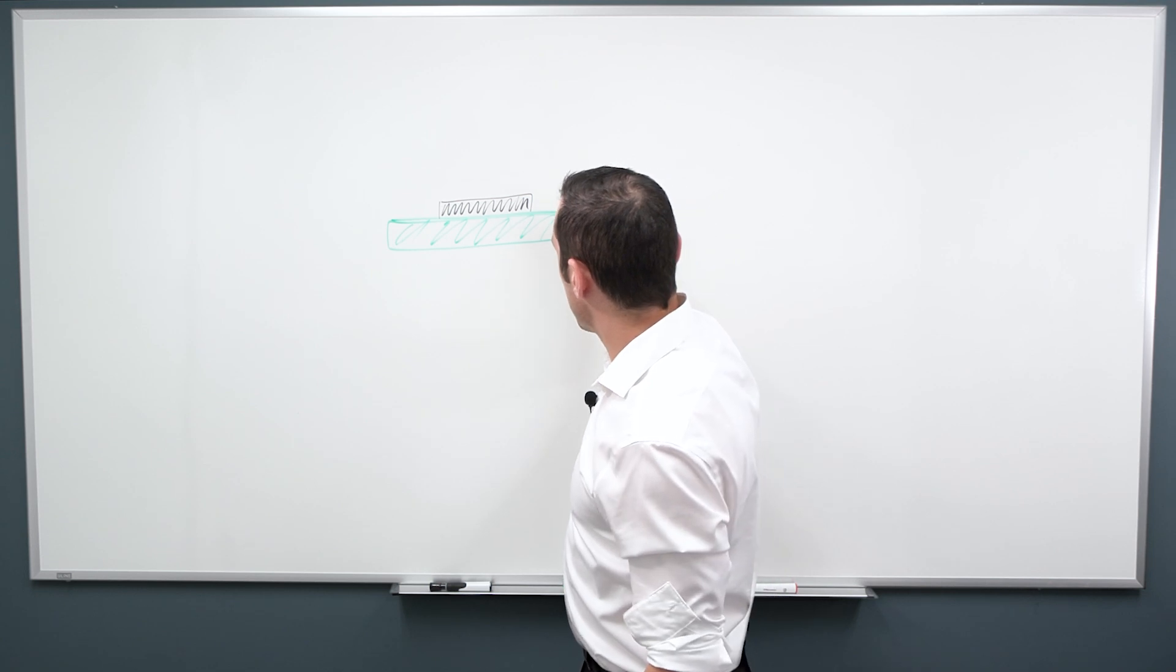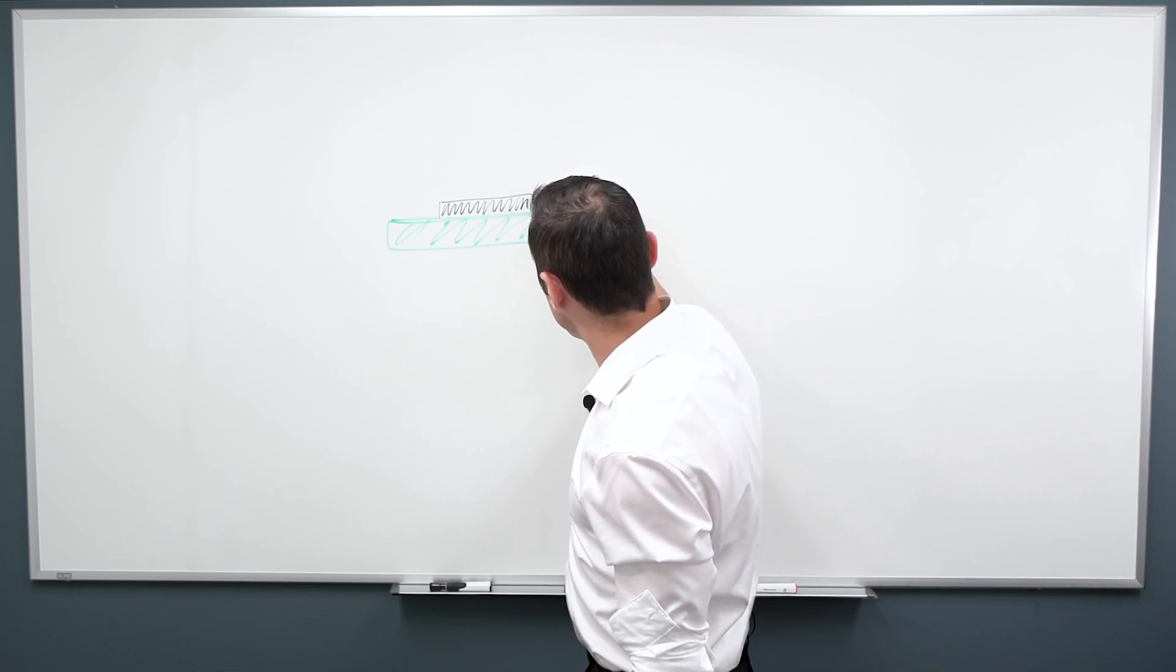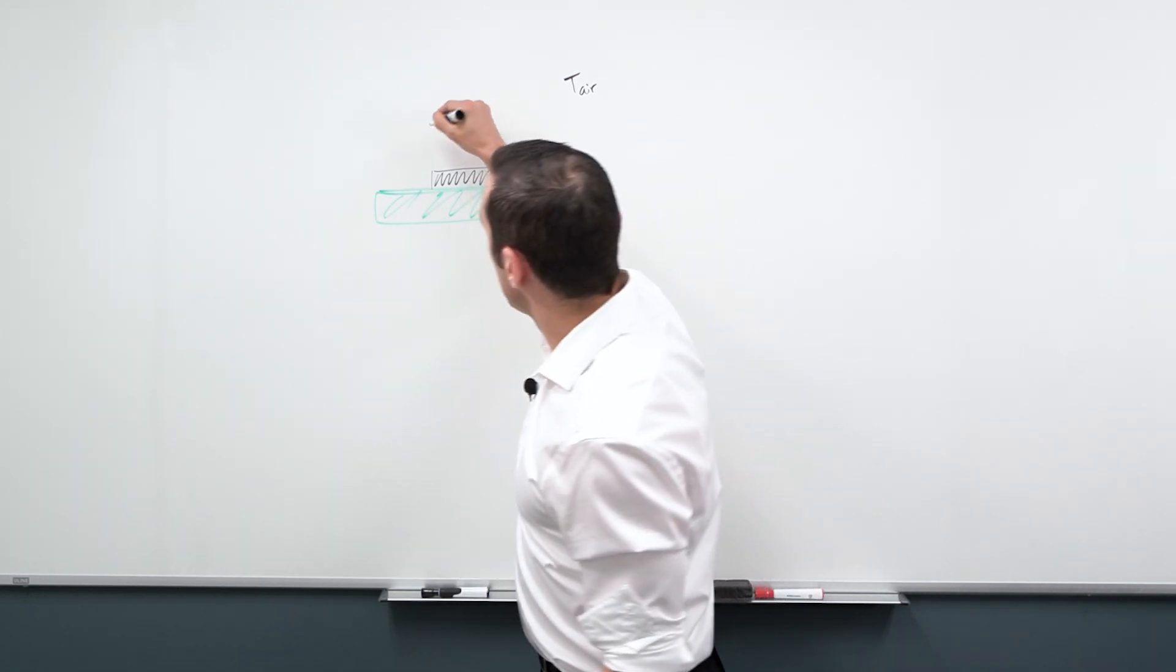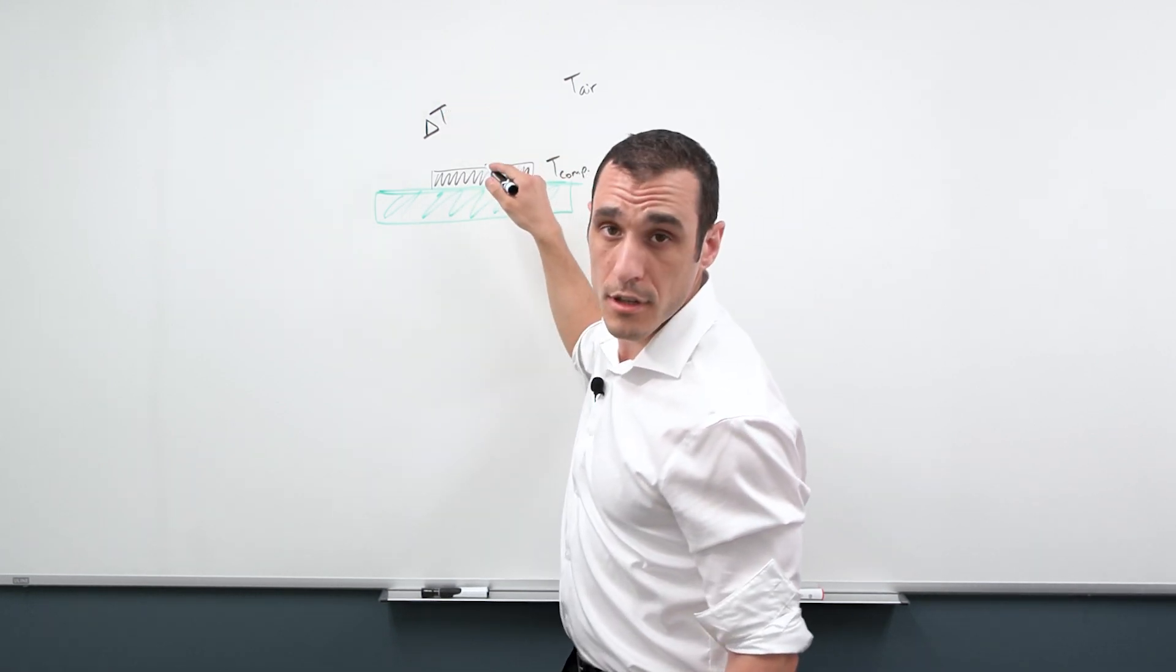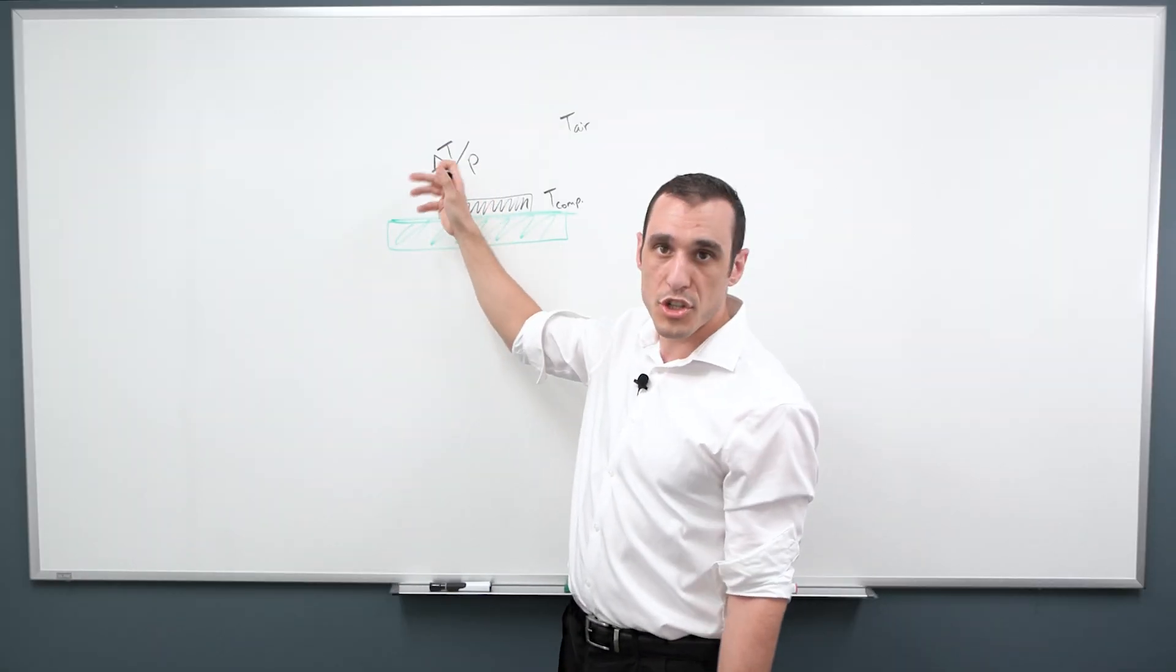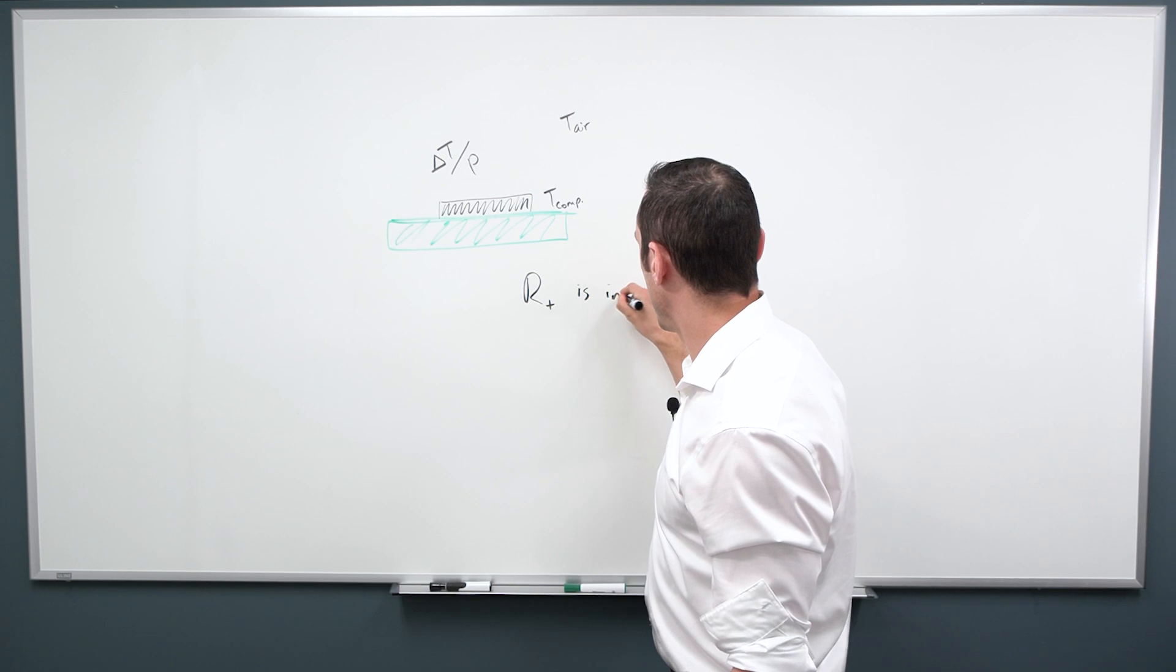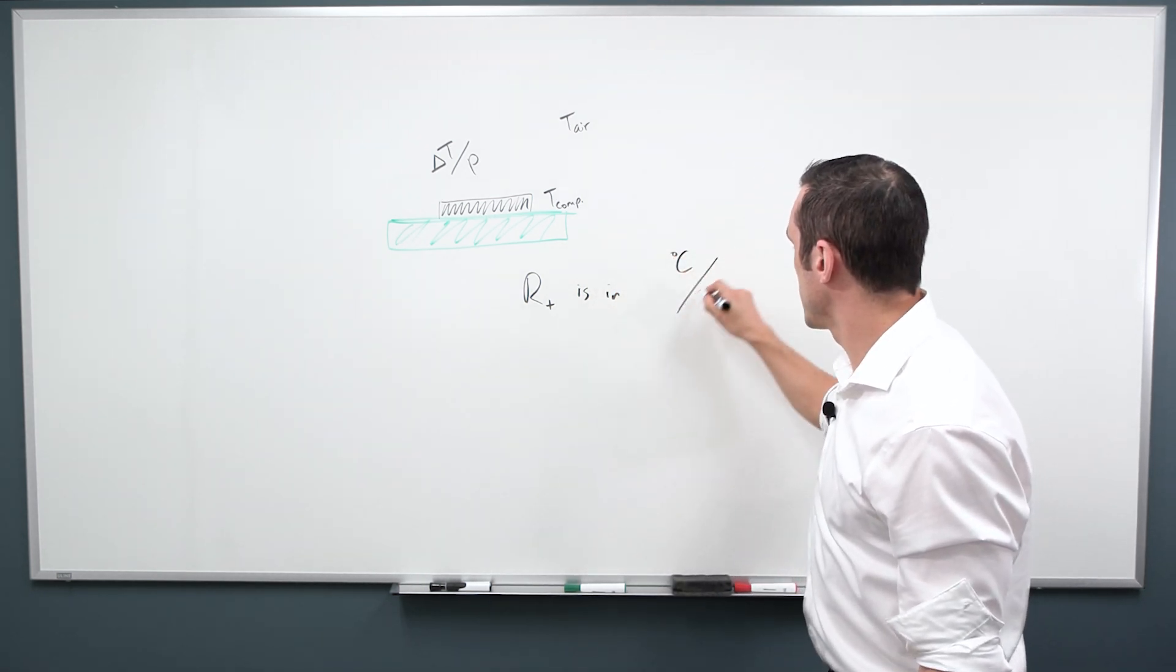The big manufacturers are really good about testing this and making sure that there is a very accurate value in the data sheets. What the thermal resistance describes is essentially when I have some temperature difference between temperature of my component and the temperature of the environment, let's just say air in this case, it tells you what the temperature changes, delta T, per unit of power that the component dissipates. So we're going to call it delta T over P. So thermal resistance RT is in units of normally degree Celsius per watt.